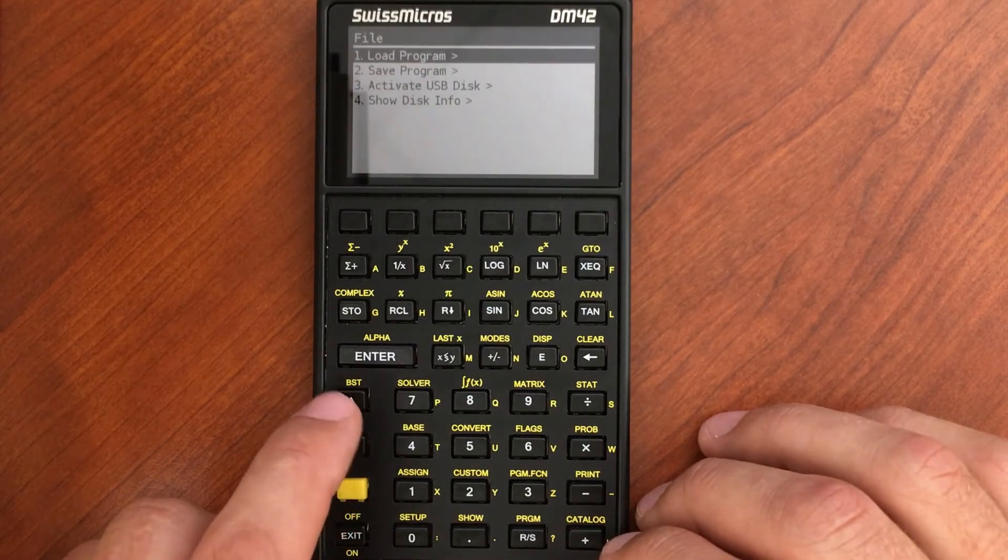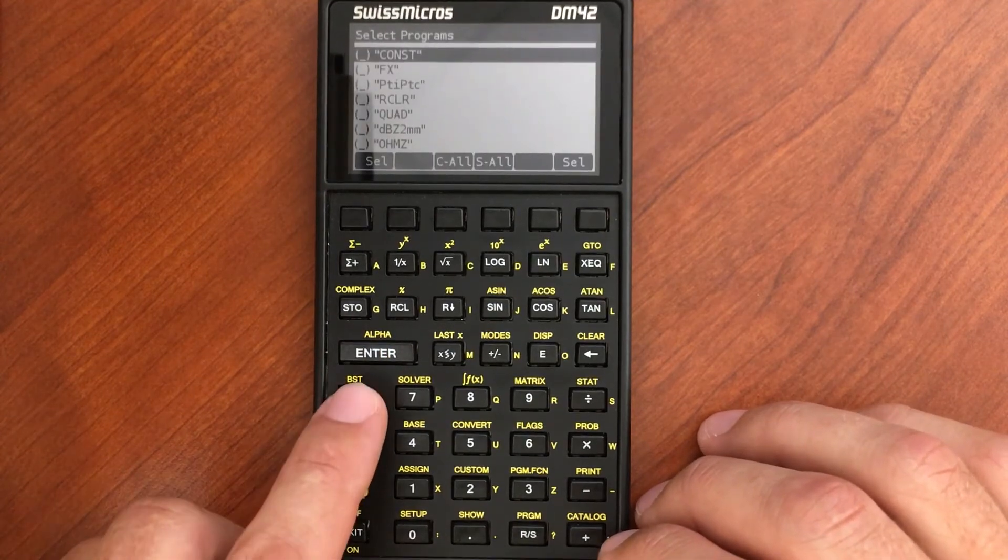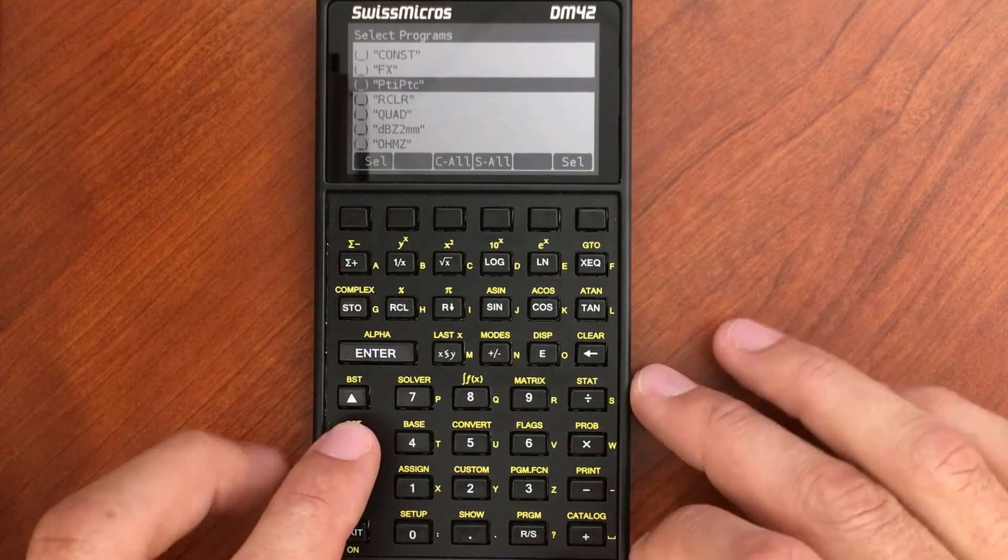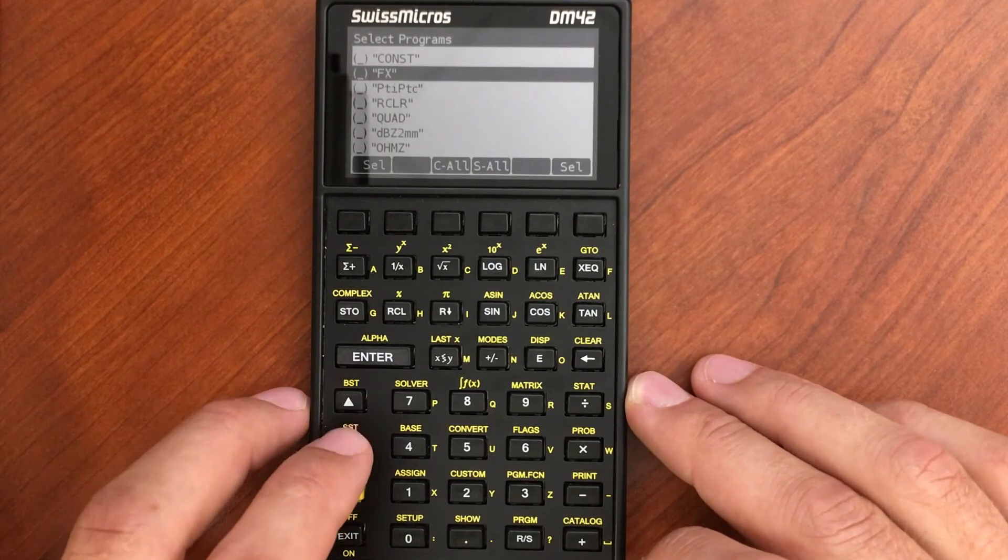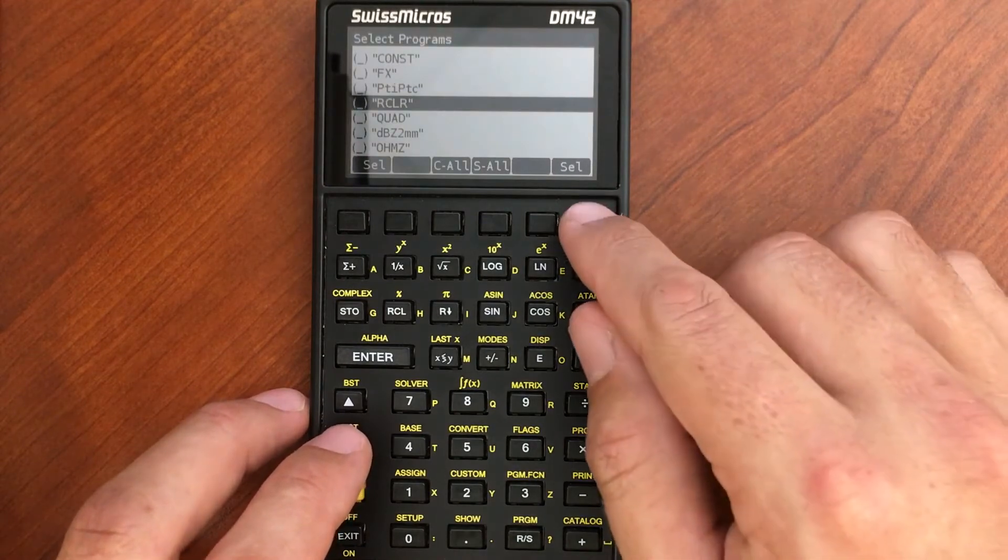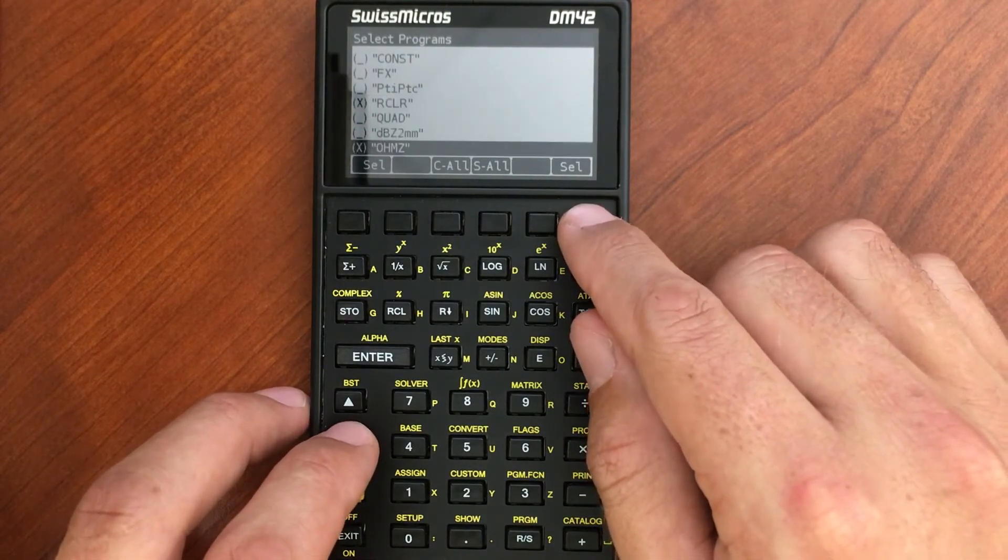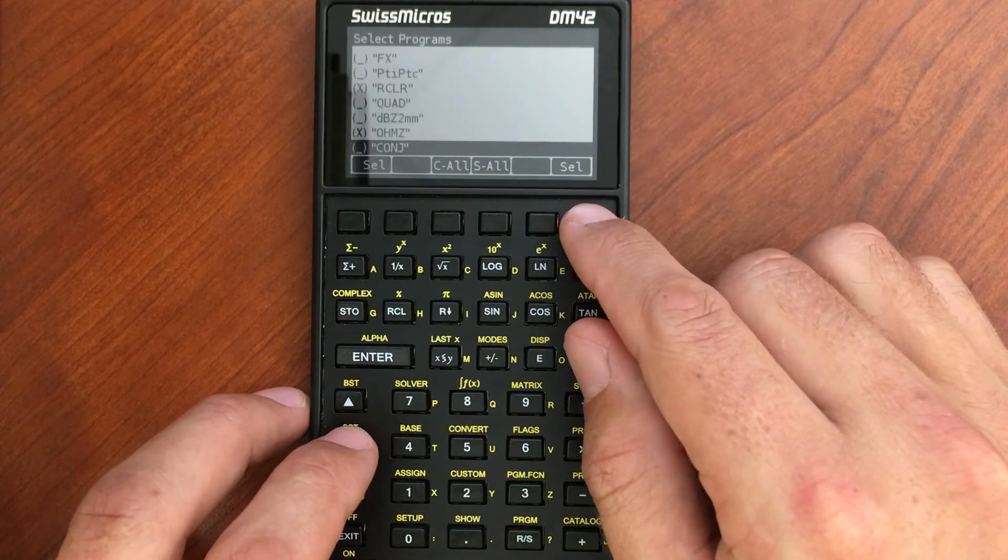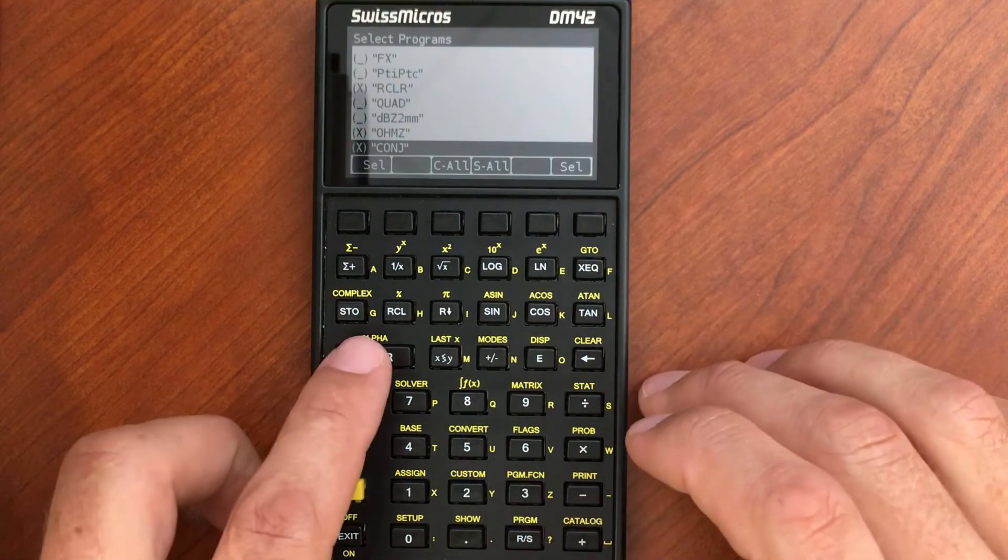Now let me show first if I want to save a program. I go Save Program and here's a list of all the programs that I currently have on my device. I can select one and save it if I want to. I've got my resistor color code here, my ohms program, and then my complex conjugate program. I'm going to select those three and hit Enter.